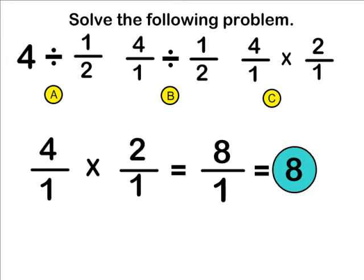So remember, if there is a problem involving a whole number and a fraction, put a 1 as the denominator for that whole number to turn it into a fraction, and always flip or write the reciprocal of the second term — the fraction after the division sign — and change that division sign into a multiplication sign.